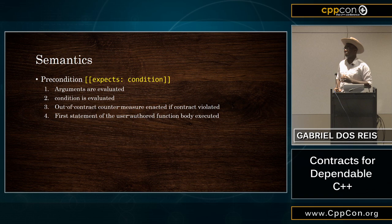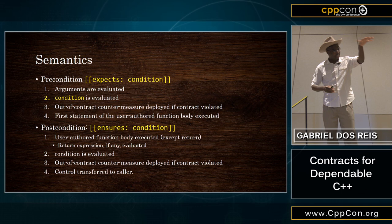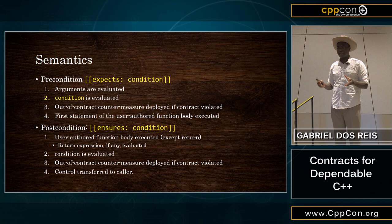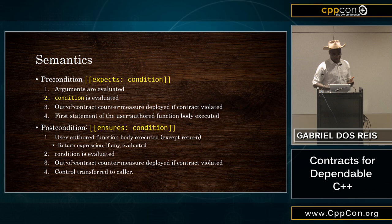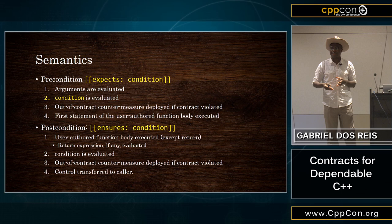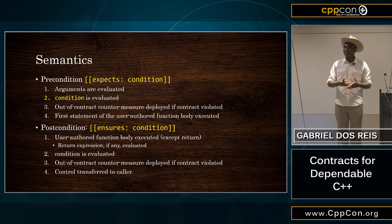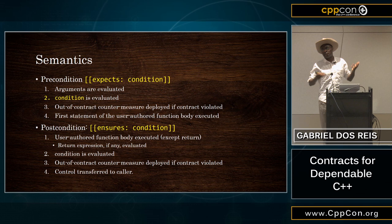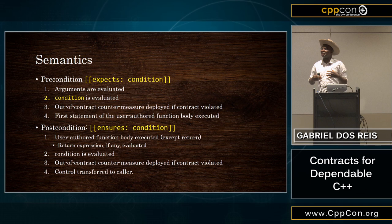For postconditions, you have something similar. It's the parts of the body that lead to returning something — you evaluate the return expression, and then you evaluate the condition of the postcondition. If it holds true, you're good to go. If it holds false, again a countermeasure is deployed — it could be abort, fail fast, or throw an exception if you're in some kind of testing. Or you can just say ignore — someone else's problem, not my problem. Those are essentially the semantics we expect from preconditions and postconditions.